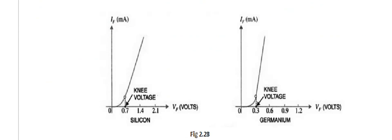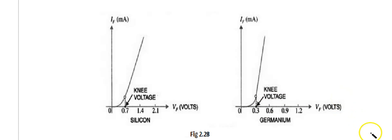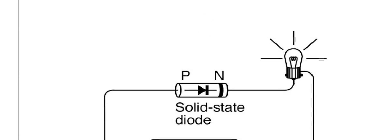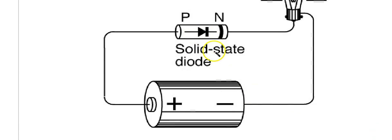For silicon, large current flows just after crossing 0.7V — this is called the knee voltage. For germanium, just crossing 0.3V causes a sharp rising current, because once you cross the barrier, the carriers start moving and accelerating towards the forward battery. So giving even a small forward bias beyond the knee voltage produces a large current. This is the P-N junction diode with the battery applied to make it forward biased, giving current.